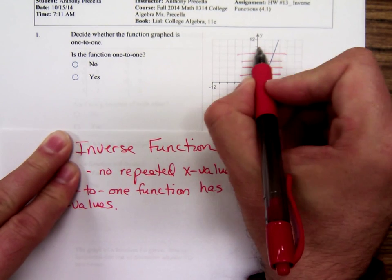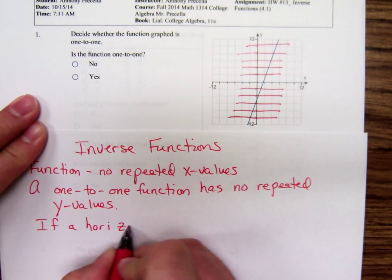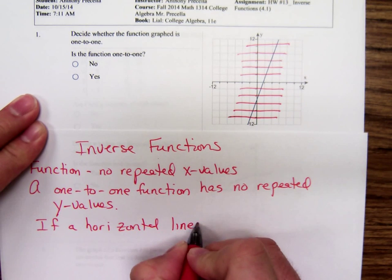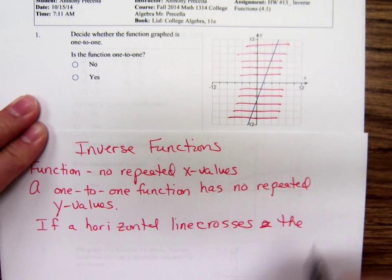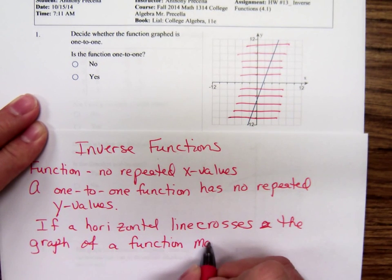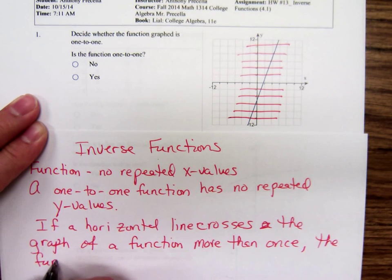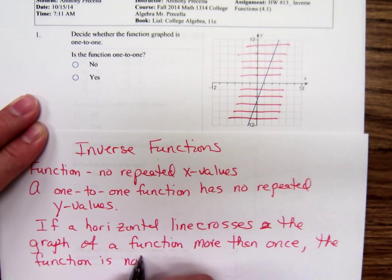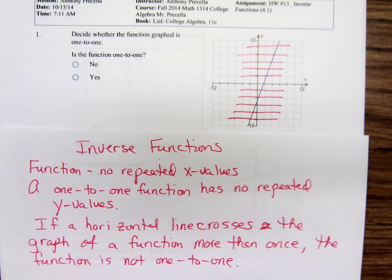If a vertical line crosses a graph more than once, it's not a function. If a horizontal line crosses the graph of a function more than once, then the graph of that function is not one-to-one. If a horizontal line can be drawn to cross a graph more than once, then that function is not one-to-one.